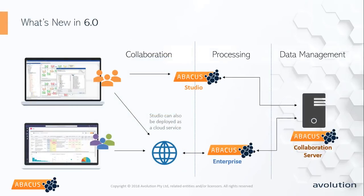Looking at the architecture of Abacus Enterprise so you understand where it fits with the rest of Abacus: the existing Abacus client software — whether installed on desktop or deployed through the cloud — is not going away. It's still used by the core EA team for metamodel configuration, diagramming, and similar tasks. Running separately is the new Abacus Enterprise product — a fully web-based application that runs in IIS and connects to the same back-end repository that Abacus Studio uses.